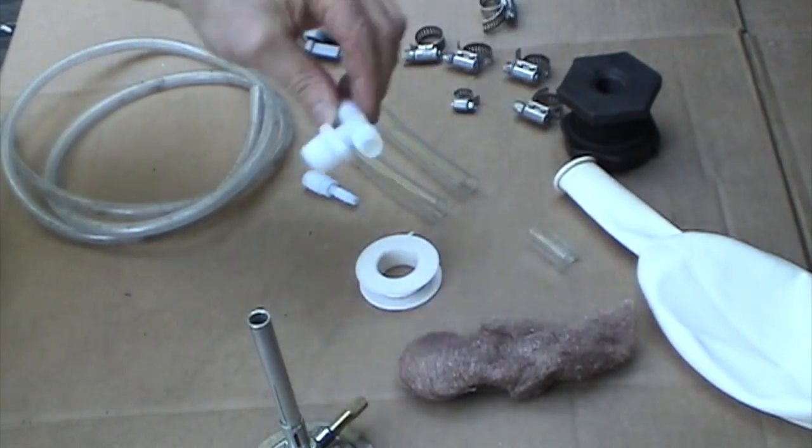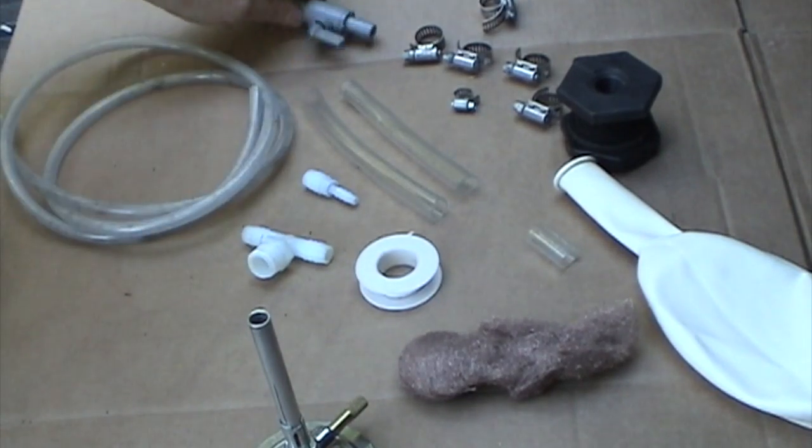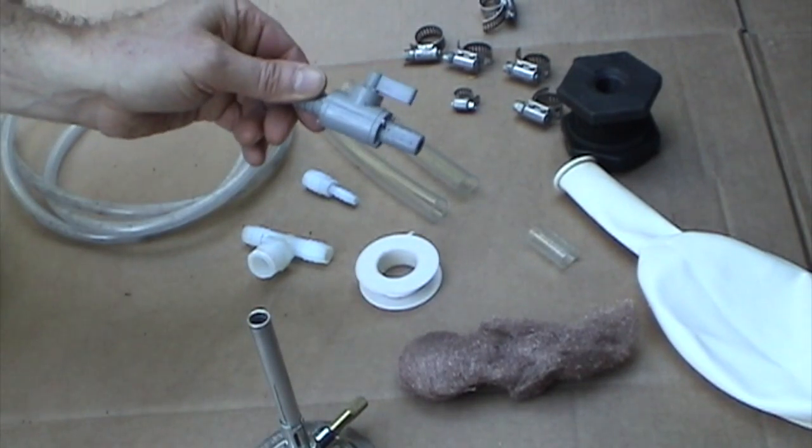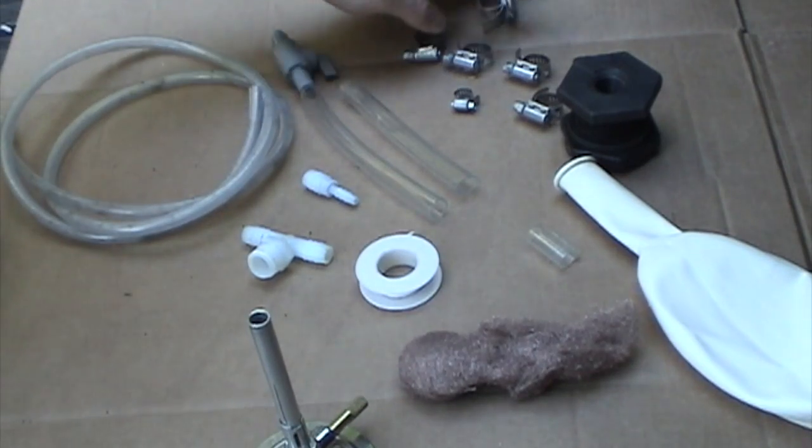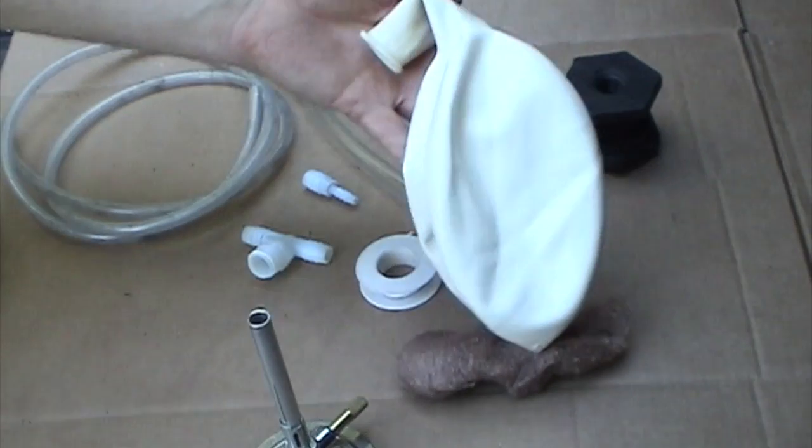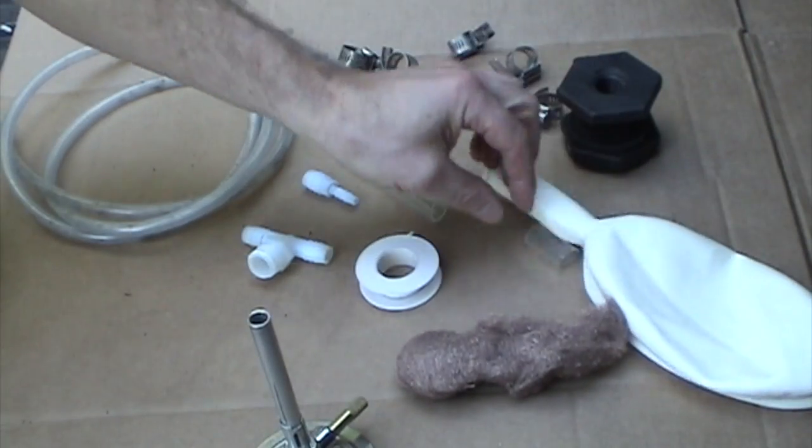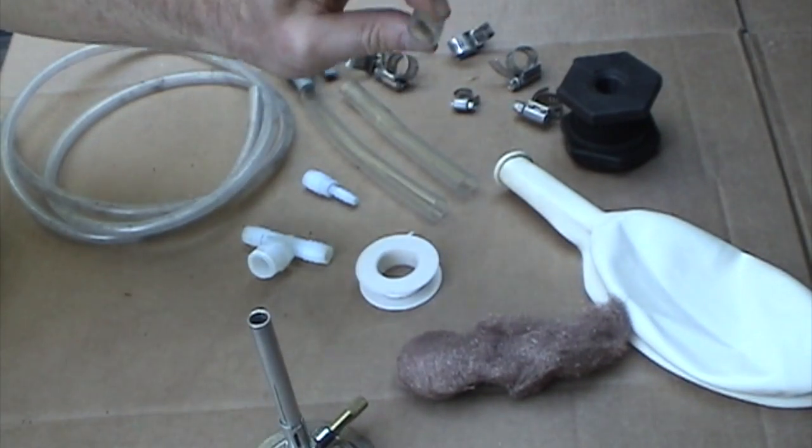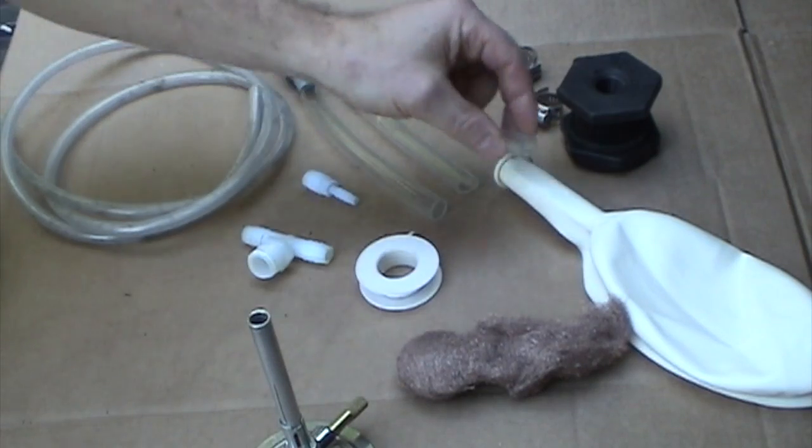A shutoff valve, just a PVC ball valve, an assortment of hose clamps, a balloon which will act as our gas storage, and a little piece of hose that we use for a gasket around the balloon.